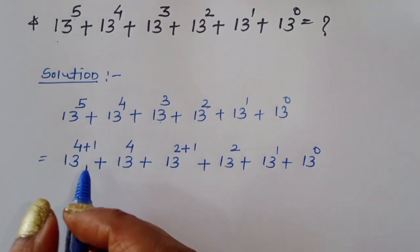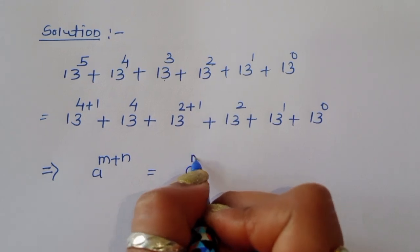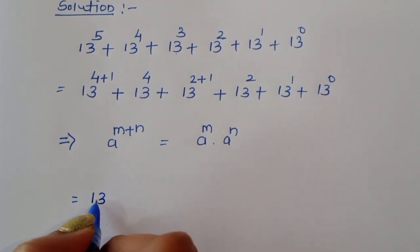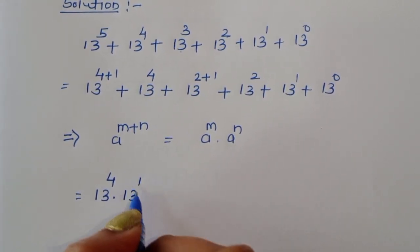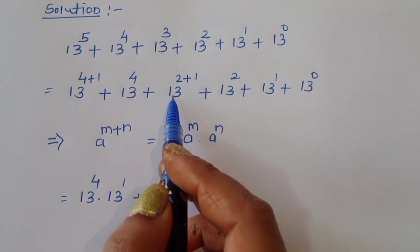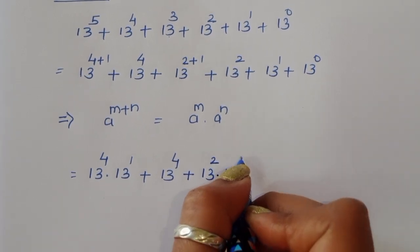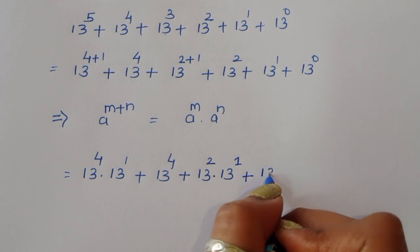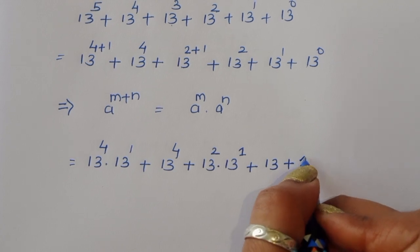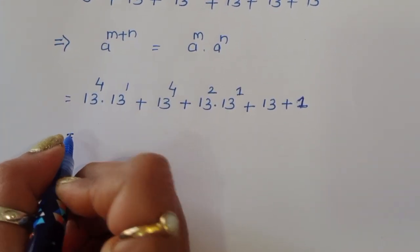Now, we know the formula: a power (m+n) is equal to a power m times a power n. Using this formula, we get 13 power 4 times 13 power 1 plus 13 power 4, plus 13 power 2 times 13 power 1 plus 13 power 2, plus 13 power 1 which is 13, plus 13 power 0. Now 13 power 0 equals 1, because any number to the power 0 is 1.